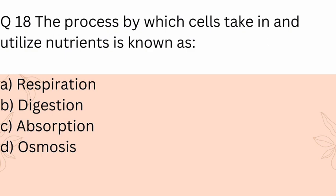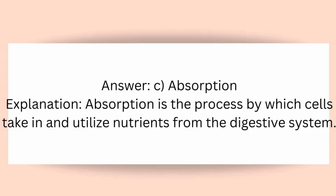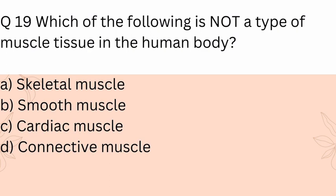Question 18: The process by which cells take in and utilize nutrients is known as? A) Respiration, B) Digestion, C) Absorption, D) Osmosis. Answer: C) Absorption. Explanation: Absorption is the process by which cells take in and utilize nutrients from the digestive system.